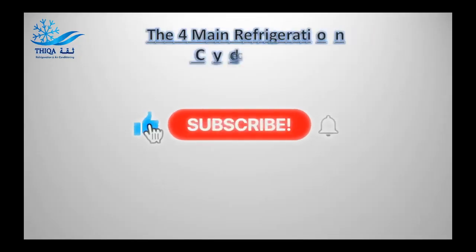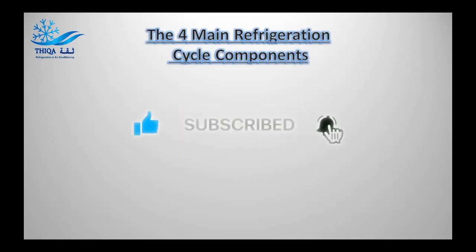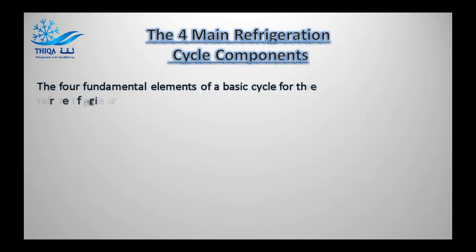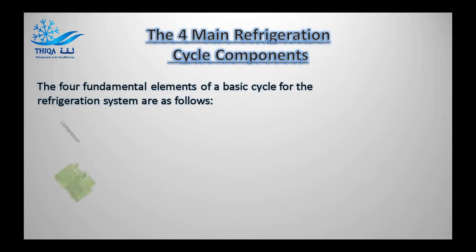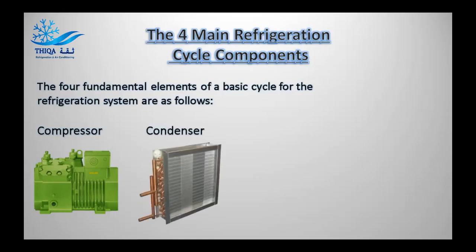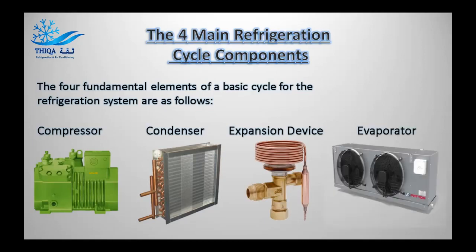The four main refrigeration cycle components. The four fundamental elements of a basic cycle for refrigeration systems are as follows: Compressor, Condenser, Expansion Device, Evaporator.